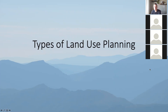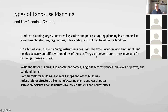So we'll get into the types of land use planning right off the bat. What is land use planning? Land use planning largely concerns legislation, policy, and adopting things like statutes, regulations — you'll hear about zoning bylaws, codes, policies. They're rules we create to say what is appropriate where. For example, you don't want to have a factory next to where somebody lives with all that pollution, right next to a school or something like that.